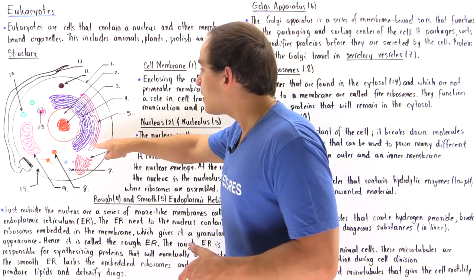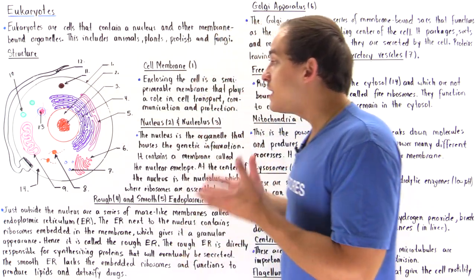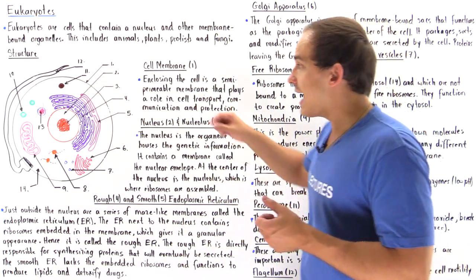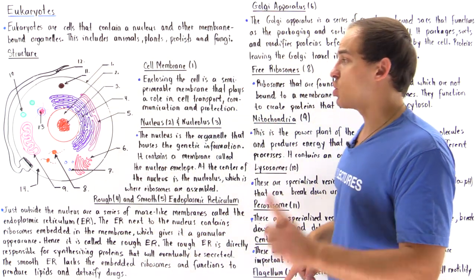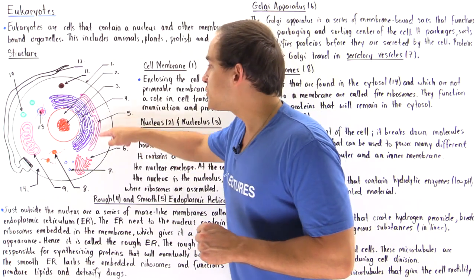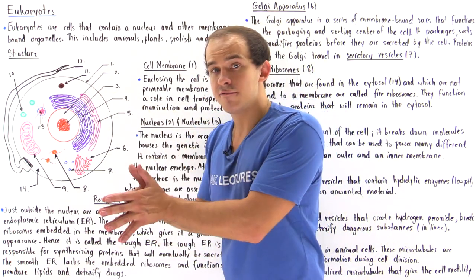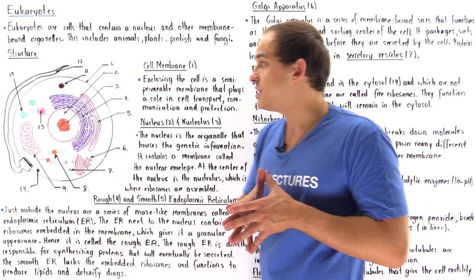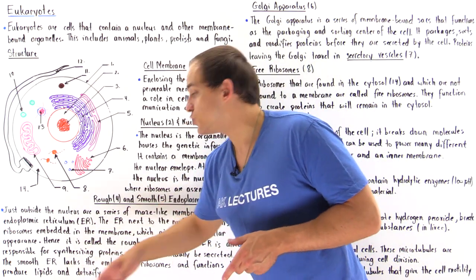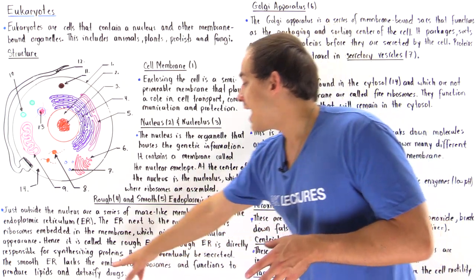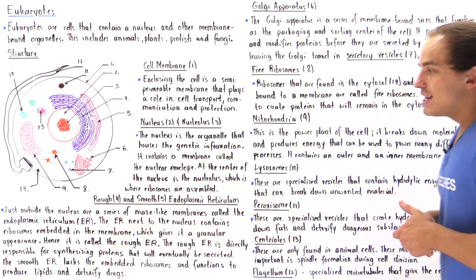The smooth ER also contains these maze-like membranes but does not contain ribosomes, meaning it isn't directly involved in synthesizing proteins. Instead, the smooth ER functions to produce lipids — our fats — as well as to detoxify toxins and drugs.